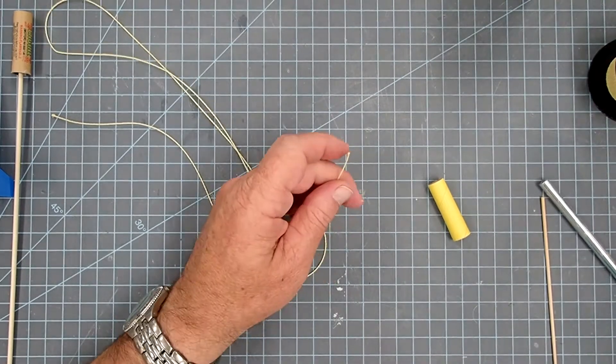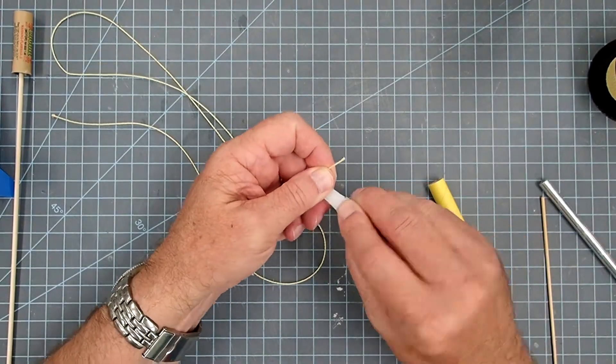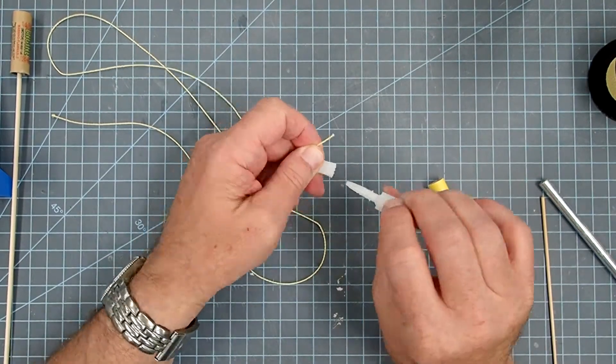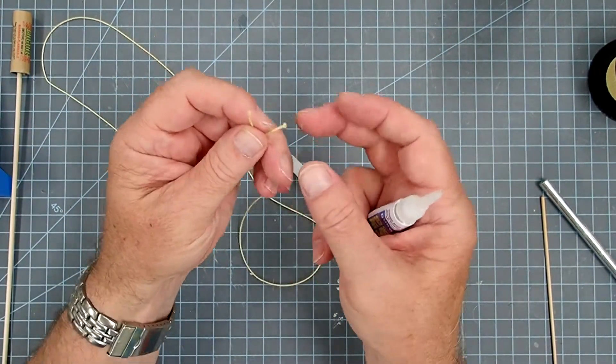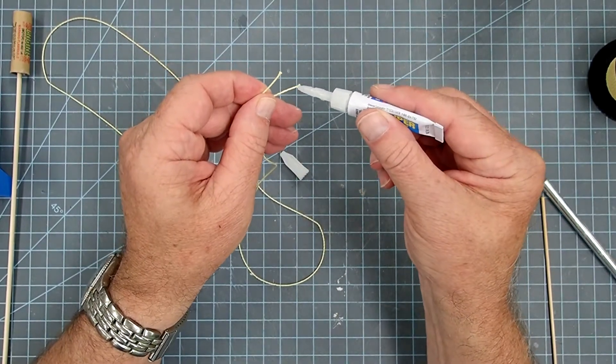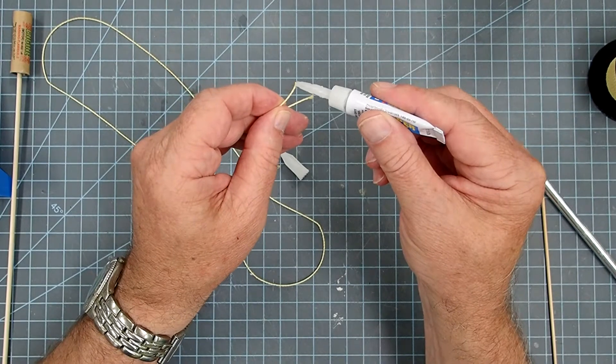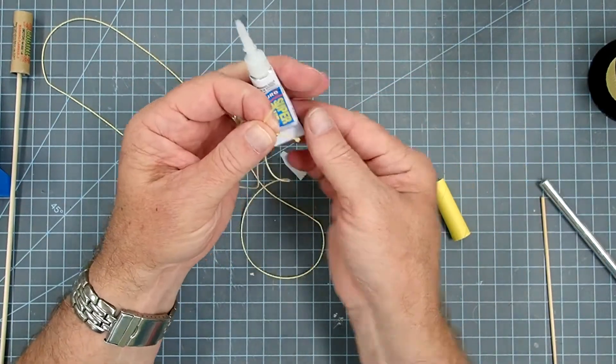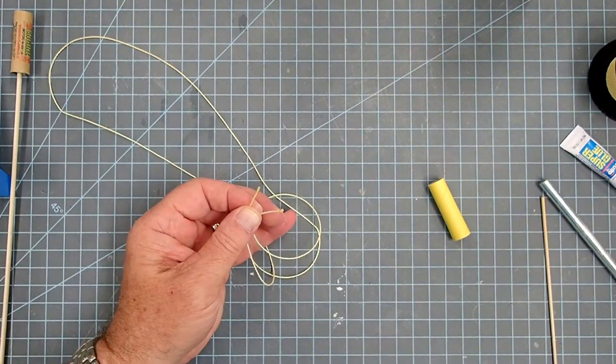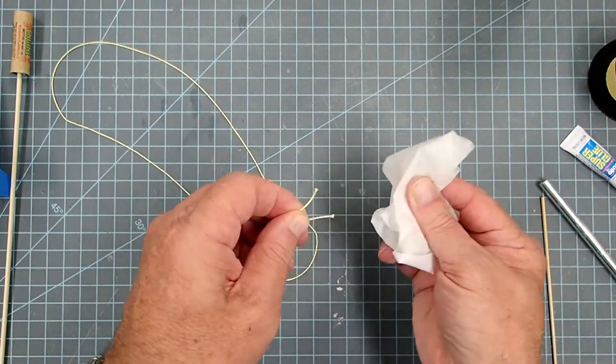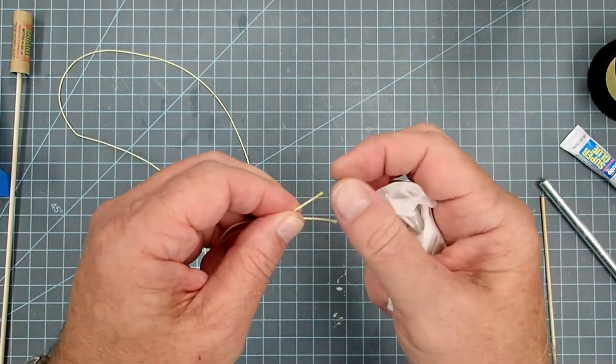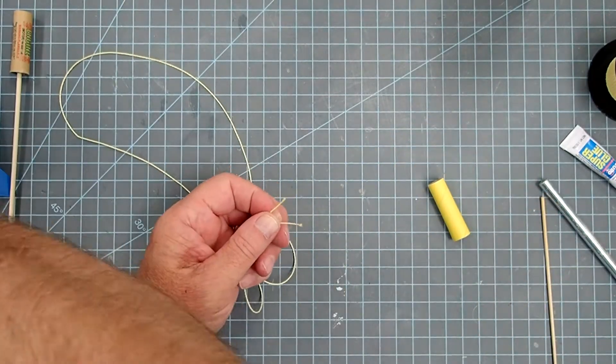Once you've got that, the next thing you're going to want to do is put a drop of super glue on those free ends because you can see this already, it's starting to fray. So this will just keep that from going further. Then I'm going to take a tissue here and wipe off the excess really quickly. That's almost immediately touchable without gluing your fingers to it.